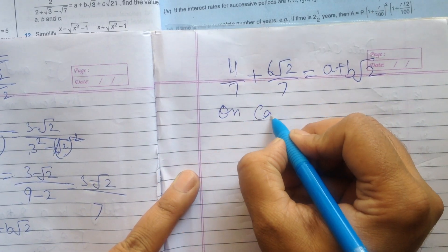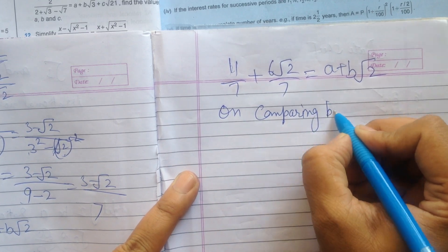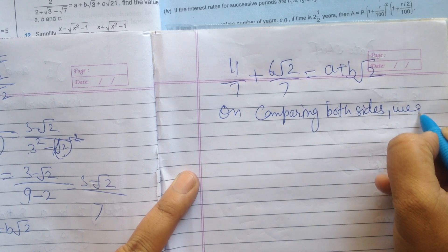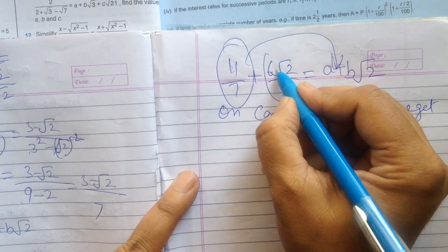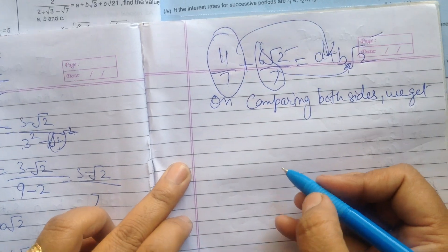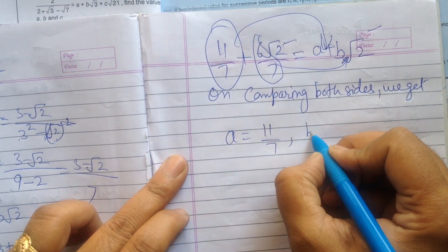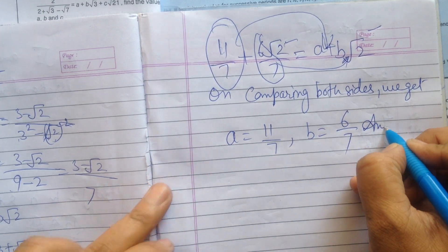Now this is equal to a plus b square root 2. On comparing both sides, we get the first number is a. Ignore the square root term, the remaining number will be b. So a is equal to 11 upon 7, b is equal to 6 upon 7 will be the answer.